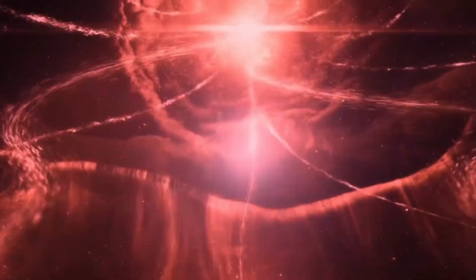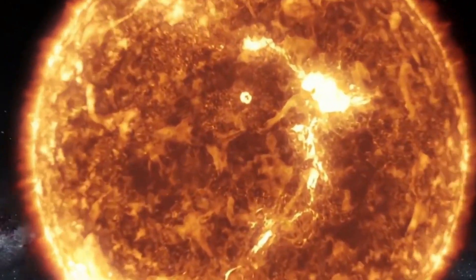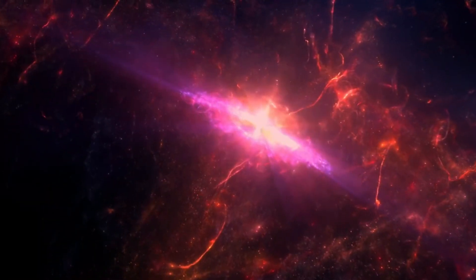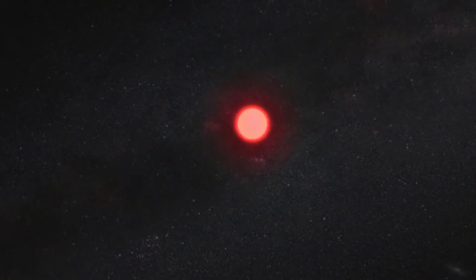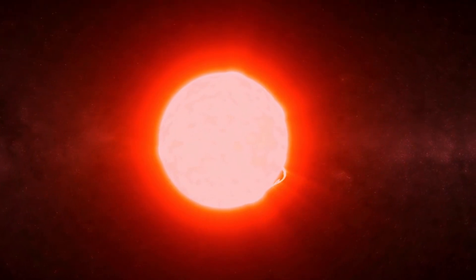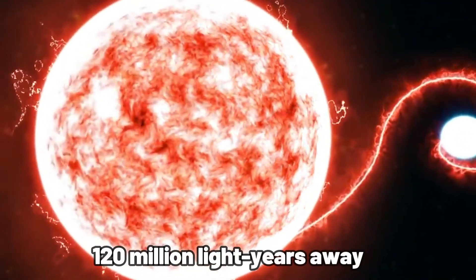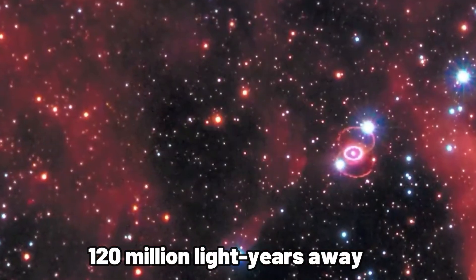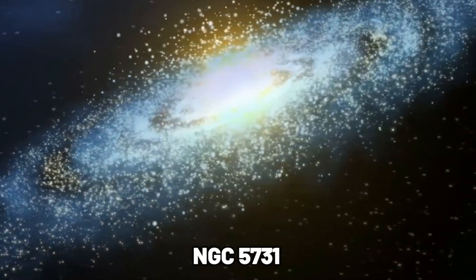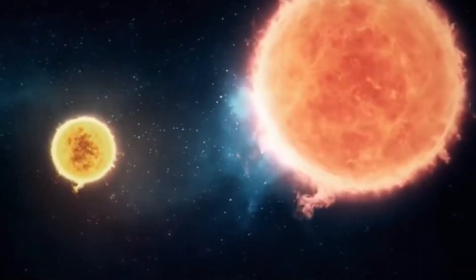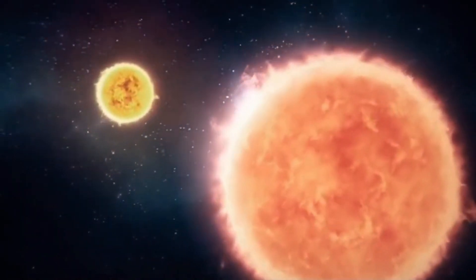They quickly realized they had found something very important, an unstable star that was about to explode. This red supergiant star was much bigger than anything that had been seen before. The group found that it was about 120 million light years away in a galaxy called NGC 5731 and had about 10 times the mass of the sun.